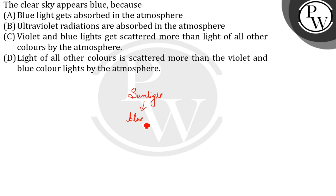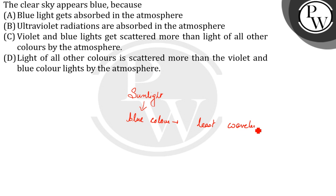blue color has the least wavelength, and because of having the least wavelength it scatters the most, and due to this the sky appears blue.